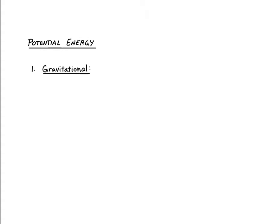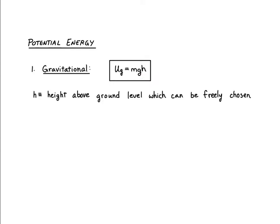For gravitational potential energy, the formula is very simple: U equals mass times g times h, where h is the height the object is above ground level. This ground level can be chosen arbitrarily — we can always set where the ground is. Once we set it, the potential energy is measured relative to that level.